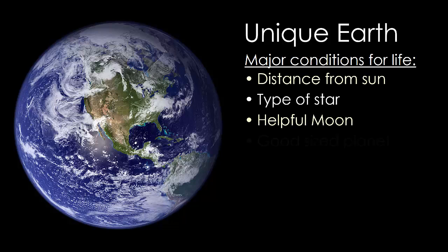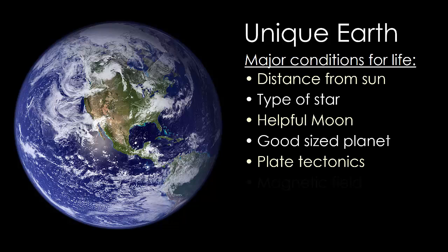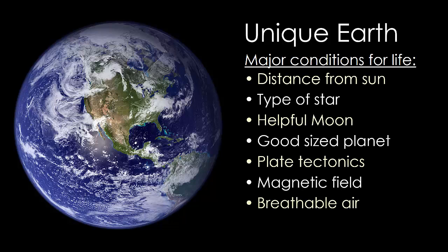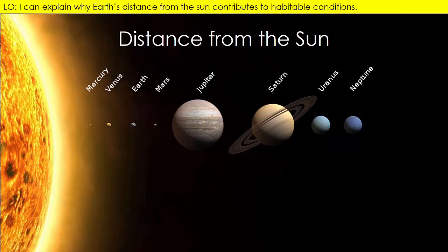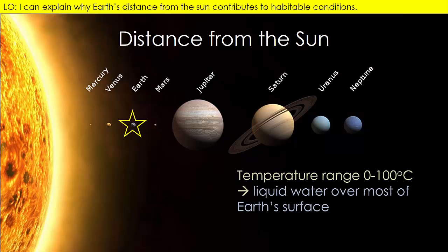We're going to look at a set of eight different conditions that contribute to life on Earth. Let's start with an obvious one. Earth is just the right distance from the Sun to ensure temperatures that result in liquid water over most of the planet's surface.